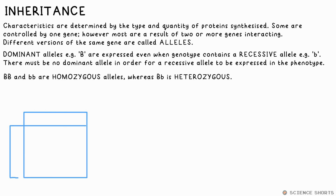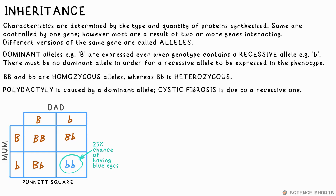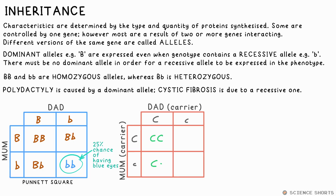We can use a Punnett square to predict the probability of a certain phenotype. My parents have brown eyes, but they both have heterozygous alleles for eye colour. There are three different outcomes of these combining, with a 25% chance of making me — that's little b, little b — so I'm not so much one in a million, more one in four. Some alleles can result in disorders being inherited. For example, polydactyly (extra fingers or toes) is caused by a dominant allele, while cystic fibrosis is caused by a recessive allele. Even if two parents don't have cystic fibrosis, they could still be carrying the recessive allele, so their child could have the disorder.